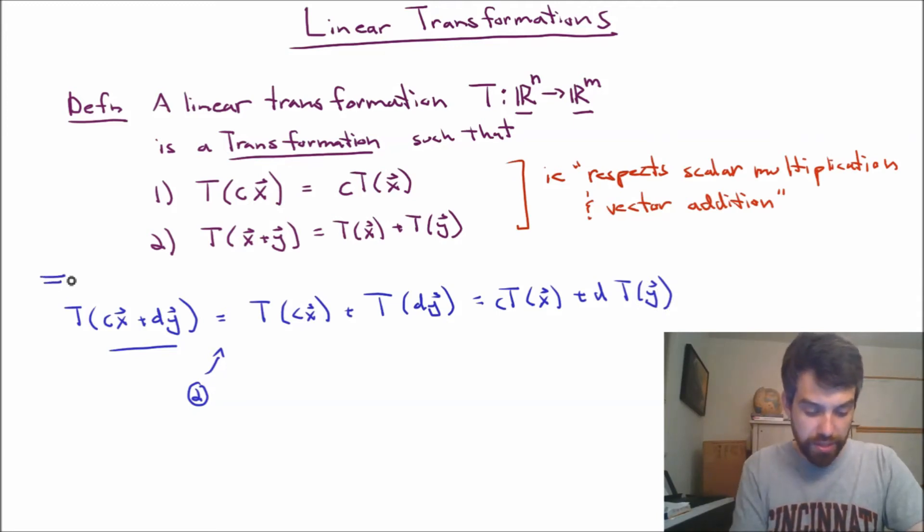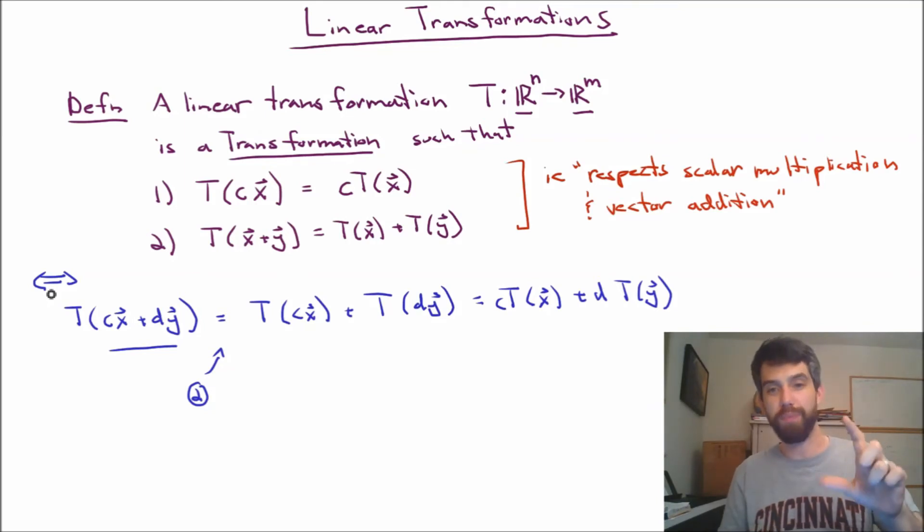And it turns out that this second property is actually if and only if. If I have that second property, I can do a sort of restriction. For example, taking d equal to 0 to get me the first property of my definition. So you might see a linear transformation defined in either of these two ways. One where I break it up as the two fundamental properties, and the other where I combine into a generic linear combination.